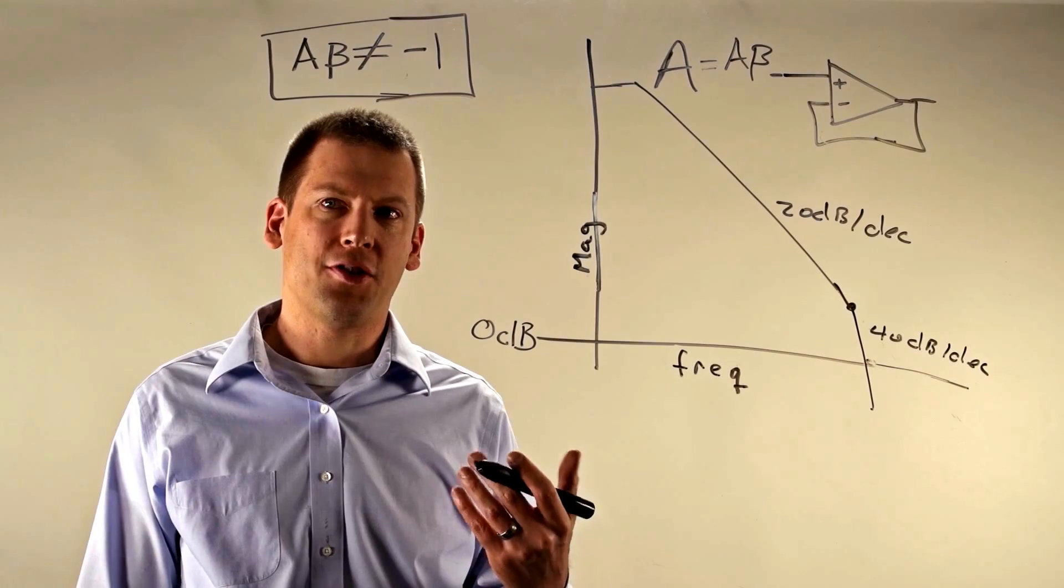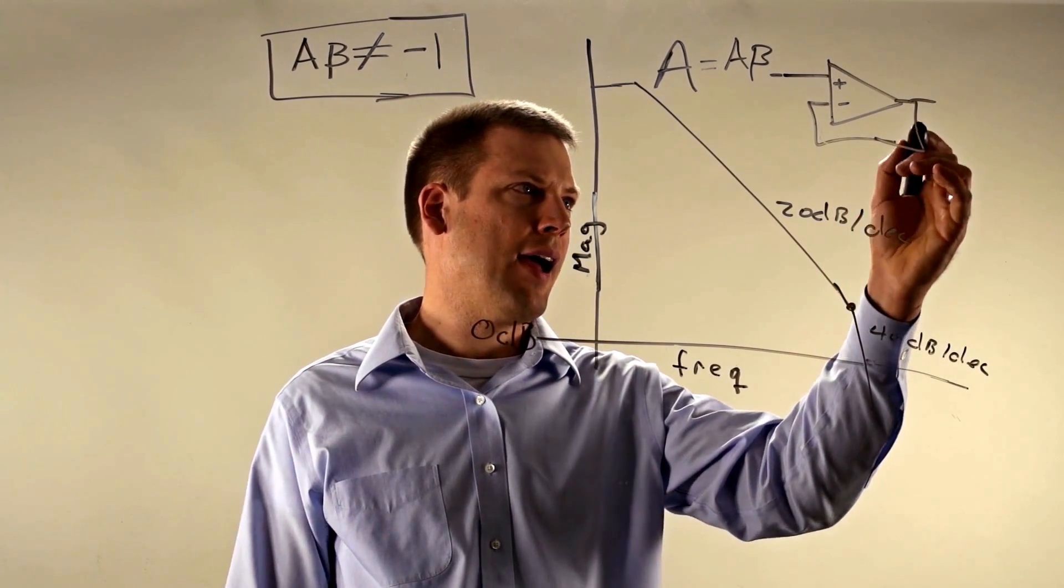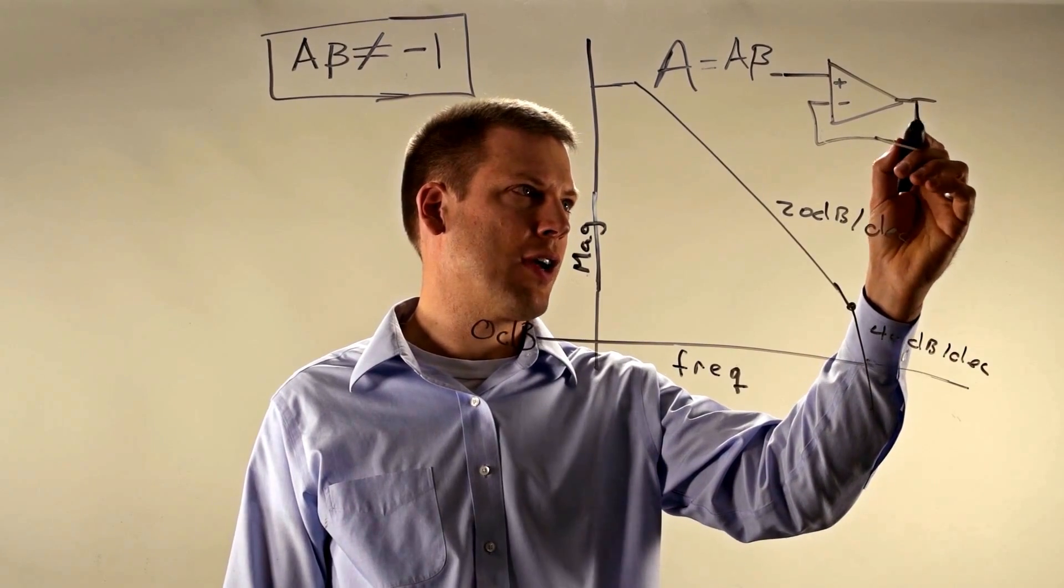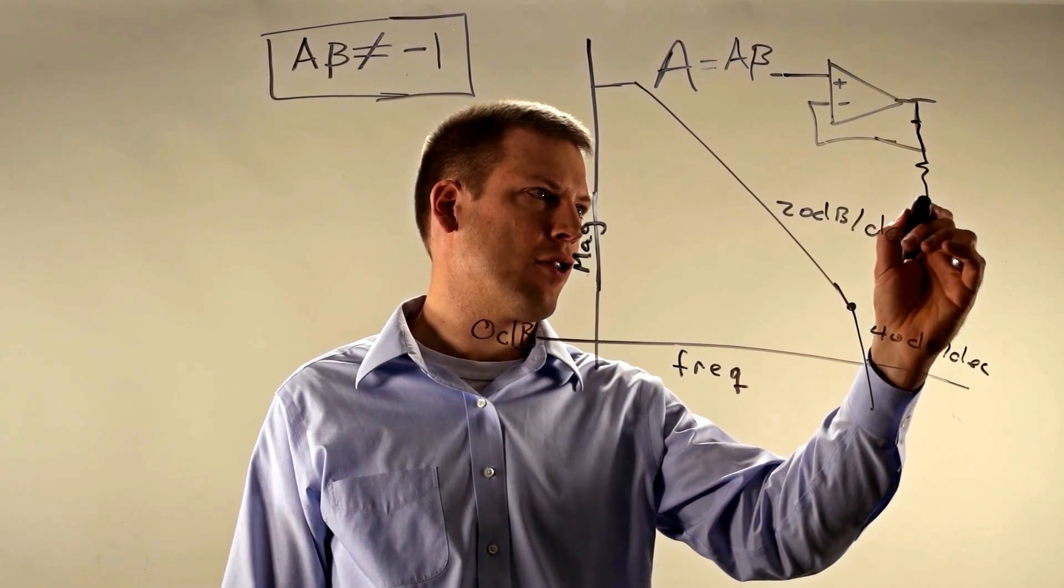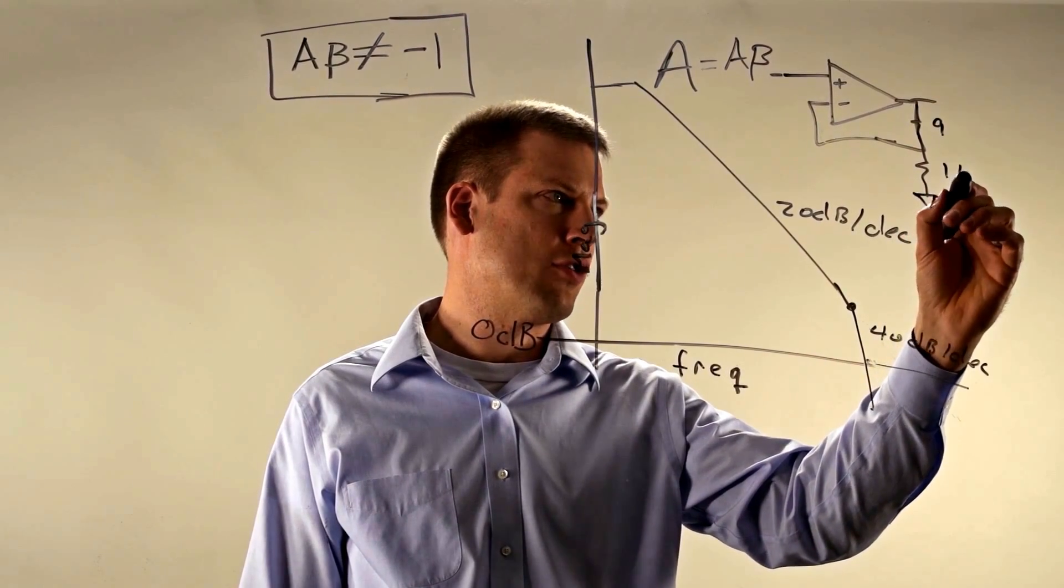So why is it that these parts are stable when I use them at a higher gain? Well, if instead of doing a voltage follower configuration, I have say some non-inverting configuration, say we have a gain of 10 that we've been using.